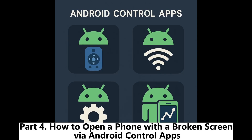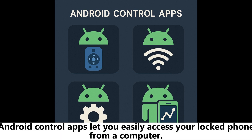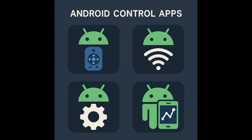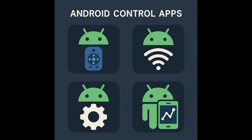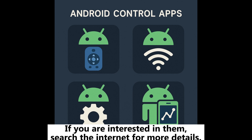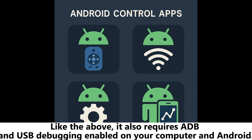Part four: how to open a phone with a broken screen via Android control apps. Android control apps let you easily access your locked phone from a computer. There are many control apps for Android in the application store — if you are interested, search the internet for more details. Like the above methods, it also requires ADB and USB debugging enabled, and it may have security issues.